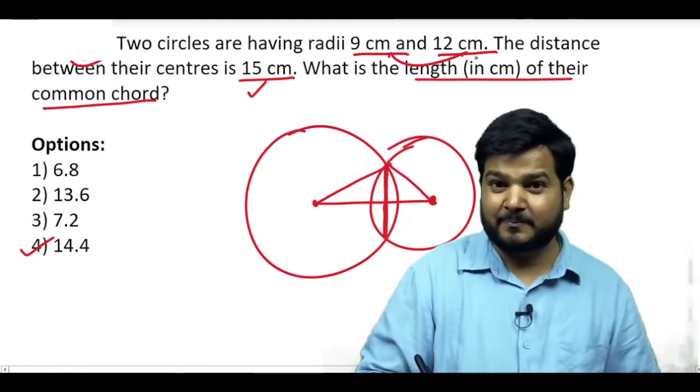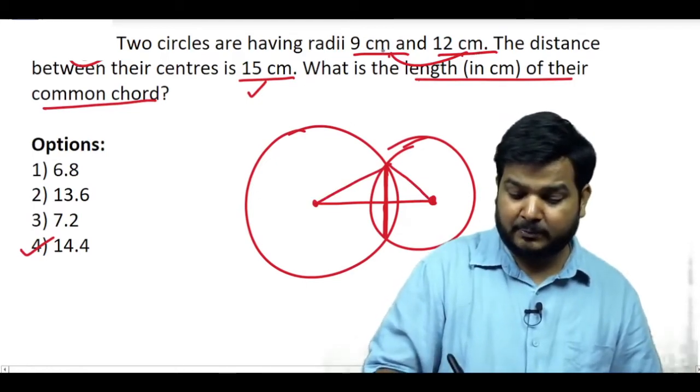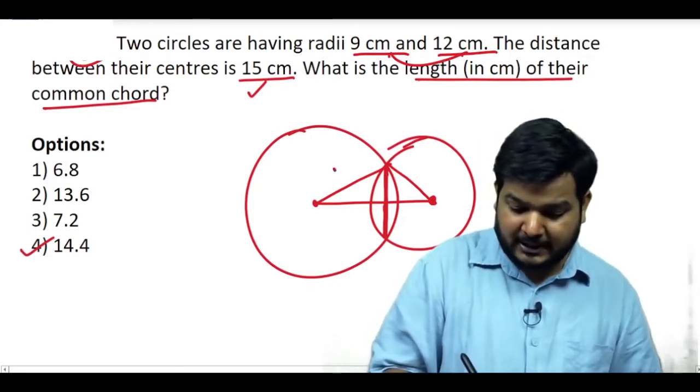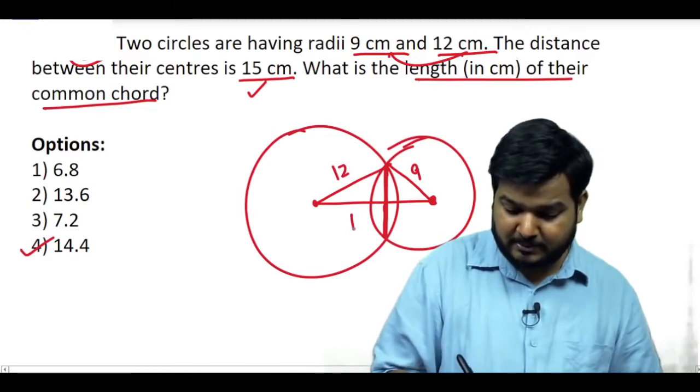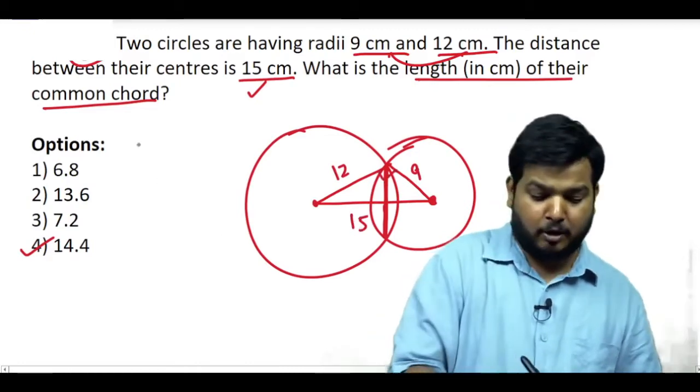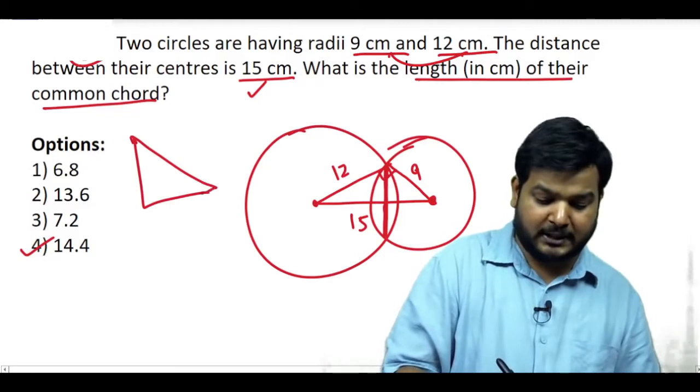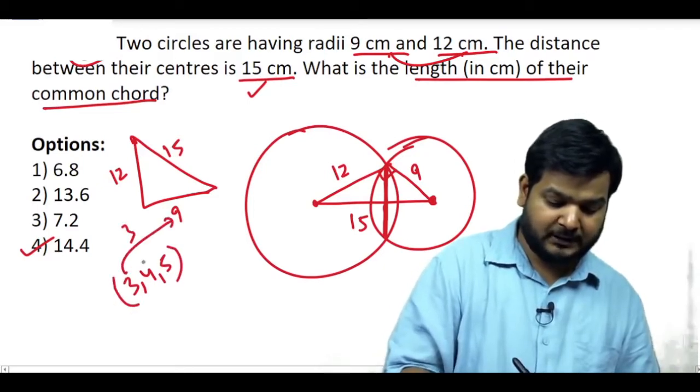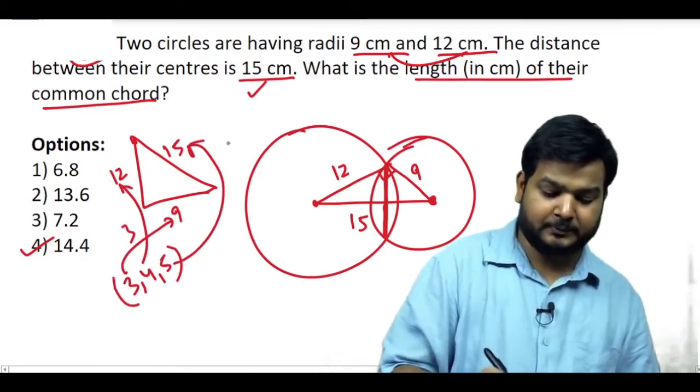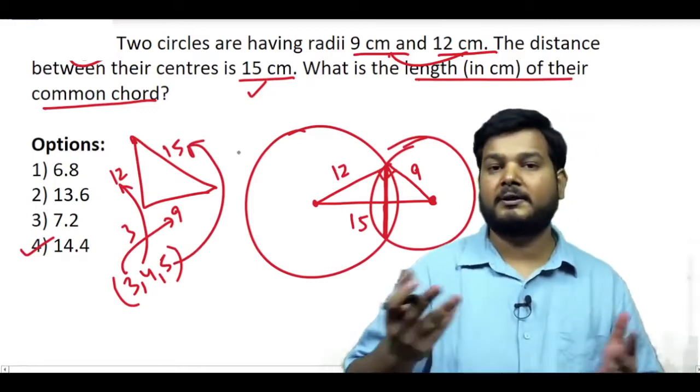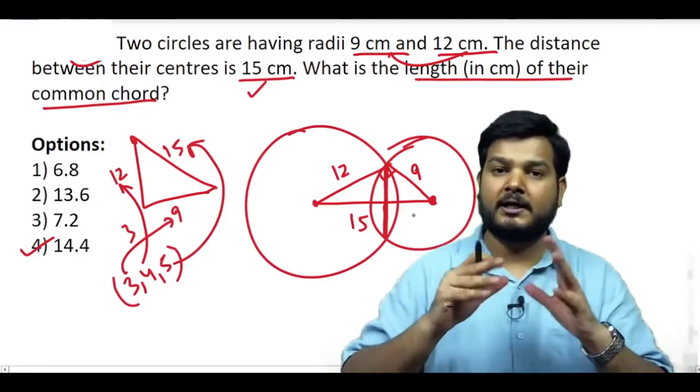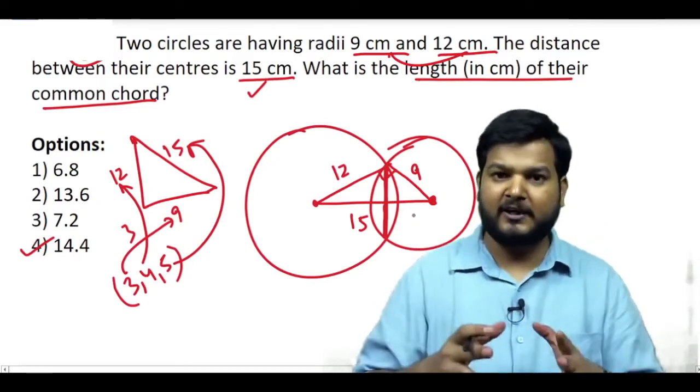Ab yeh ek bohot interesting cheez jo aapko dikhi ho, dekho yeh ki inka jo radius hai wo dhyan se dekhna kitna diya hua hai aapko 9, 12 aur yeh value kya hai 15. Ab yeh dekhte hi aapko ek cheez samajh mein aani chahiye ki yeh angle 90 degree hai bhai. 9-12-15 toh ek bohot hi standard well-known Pythagorean triplet hai jo ki bana hua hai 3-4-5 se. Scale factor laga do aap 3 ka sab pe, 3-3 laga do. Kya milega aapko? 12-9-15 ka right angle triangle.